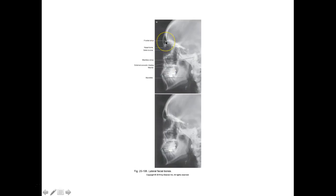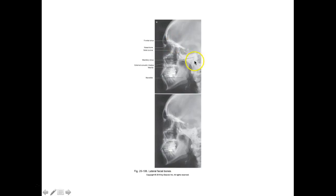Labeling on the lateral: frontal sinus, nasal bones, sella turcica, orbital plates of the frontal bone, maxillary sinus, EAM, maxilla, and mandible. If the orbital plates are off and the mandibular rami look okay, that tells us there's tilt rather than rotation. If the rami were off instead, that would indicate rotation.